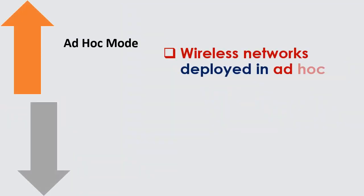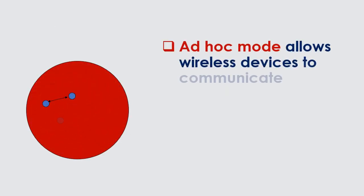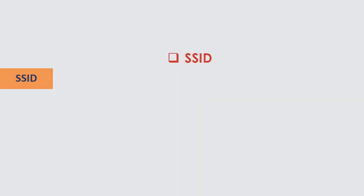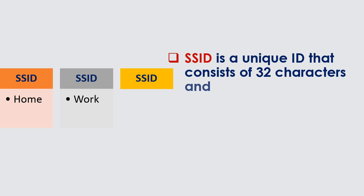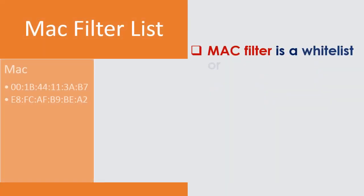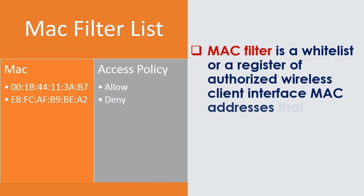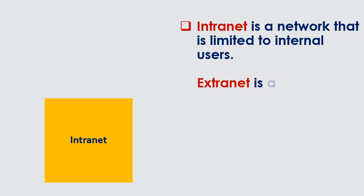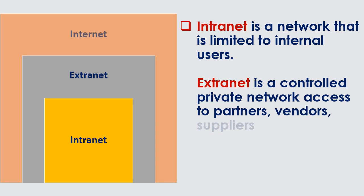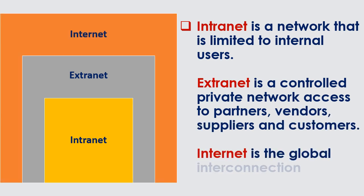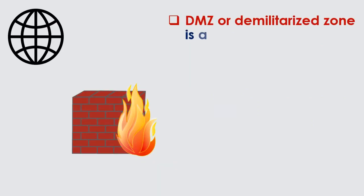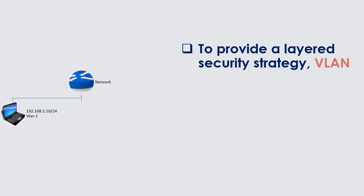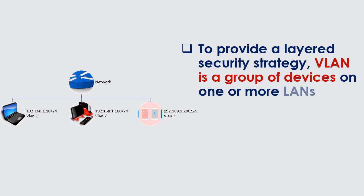Wireless networks can be deployed in ad-hoc or infrastructure modes. Ad-hoc mode allows wireless devices to communicate without centralized control, while infrastructure mode prevents devices from interacting directly. SSID is a unique ID consisting of 32 characters used for naming wireless networks. A MAC filter is a whitelist of authorized wireless client interface MAC addresses used by a WAP. Intranet is a network limited to internal users. Extranet is a controlled private network providing access to partners, vendors, suppliers, and customers. Internet is the global interconnection of networks. DMZ, or Demilitarized Zone, is a perimeter network that separates the organizational LAN from the public, untrusted internet. VLAN is a group of devices on one or more LANs configured to communicate across different LAN segments.